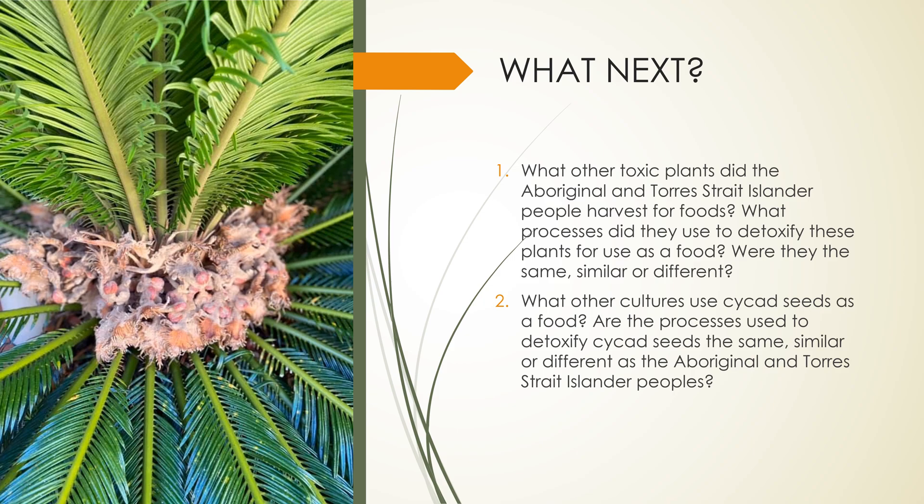Now that you're aware of the processes used by the Aboriginal and Torres Strait Islander people to remove toxins from cycad seeds, you might like to do some further research. Option one is to look at other toxic plants in Australia that the Aboriginal and Torres Strait Islander people may have harvested for food — what processes did they use to detoxify these plants, and were those processes the same, similar, or different to those used for the cycad seed? Option two is to look at other cultures that have used cycad seeds as a food — it wasn't just the Aboriginal people. African and Asian cultures in particular might be two to look at, and you can ask whether their detoxification processes were the same, similar, or different to those used by the Aboriginal and Torres Strait Islander peoples.